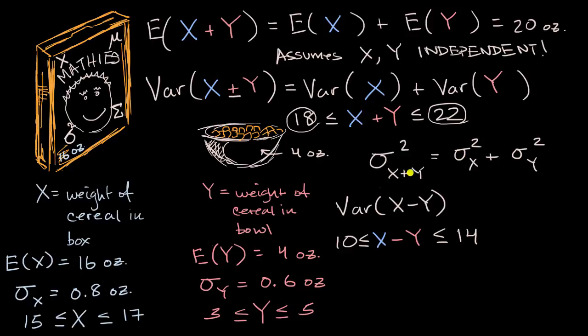Now what is the variance of X? Well, it's the standard deviation of X squared. 0.8 squared. This is 0.64. The standard deviation of Y is 0.6. You square it to get the variance. That's 0.36.